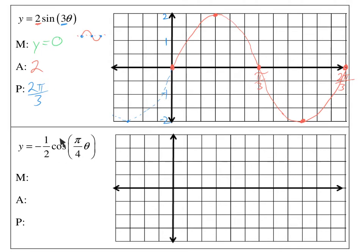Now we're going to graph a cosine function. My midline is going to be y equals 0, since there's nothing added. Your amplitude is the front number, which is one half. The negative means there's going to be a flip — the graph is going to be upside down. And your period is 2 pi divided by the coefficient. So if I take 2 pi and divide by pi over 4, that equals 2 pi times 4 over pi. The pi's cancel, leaving me 8. So my period is 8.